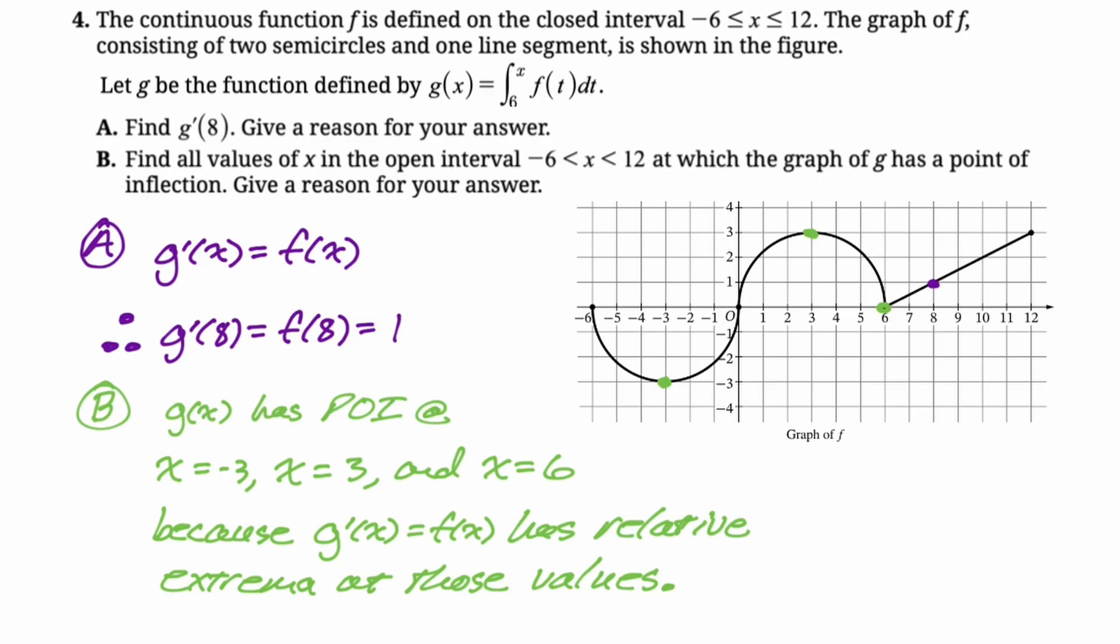We know g is continuous at 6 because its derivative, g prime, exists at 6. Just wanted to throw that in because that's a very common point of inflection that people will miss because they think we need to be differentiable at those points. Not the case. Let's take a look at the next part.